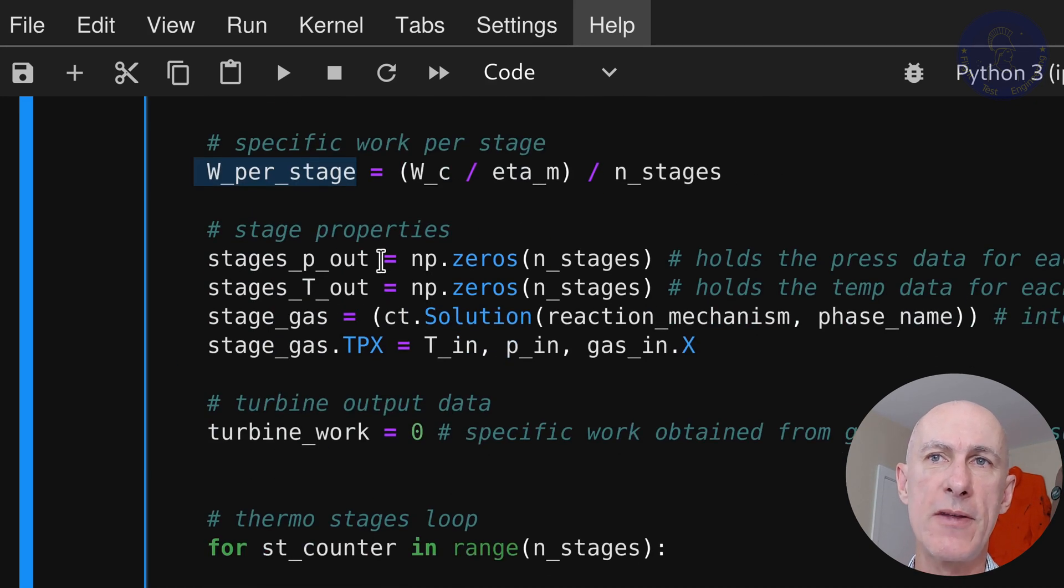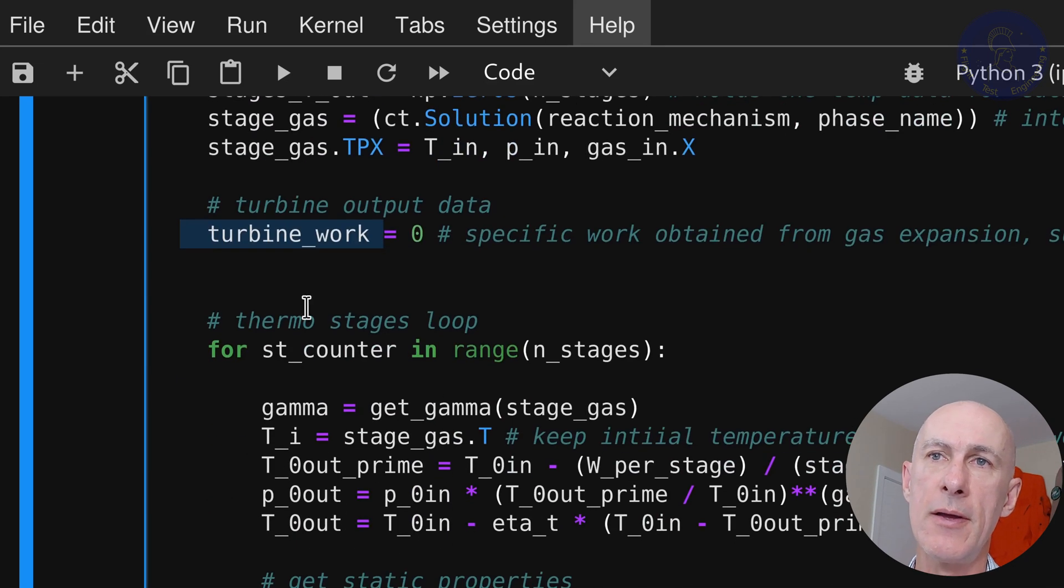Then for the stage properties, it's similar to what we had in the compressor. We create a placeholder for our results. This will be used later outside of this function to plot the results as well. We also create a dummy gas here, stage gas, to be used as we move from one turbine stage to the next. Now the turbine output data, this is going to be the collector for the work delivered by the turbine.